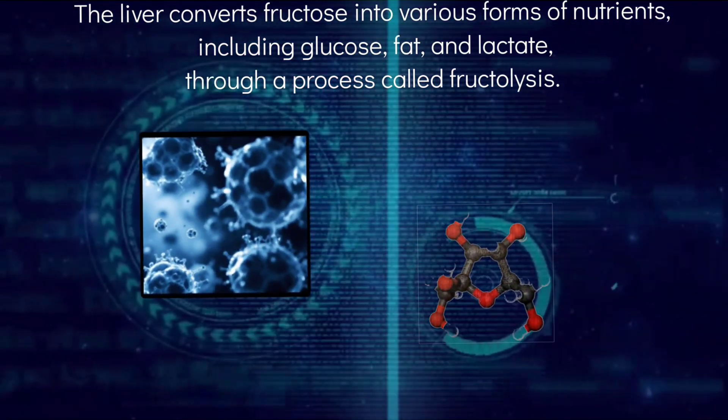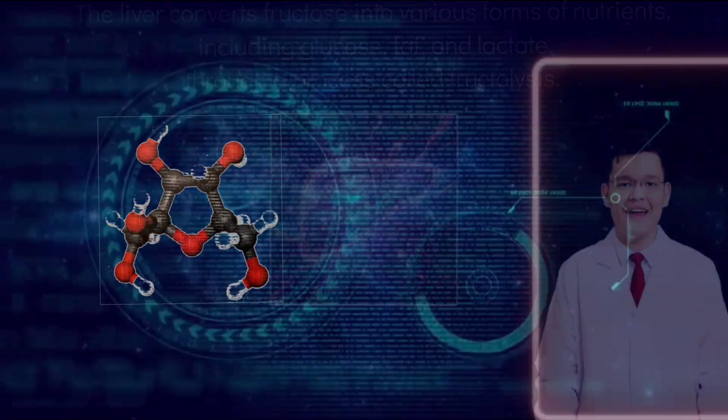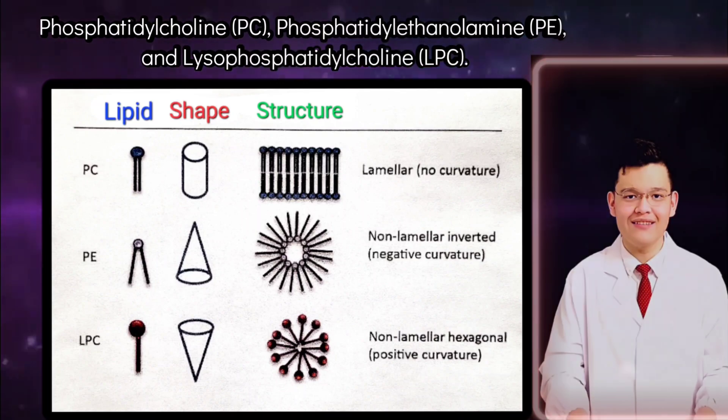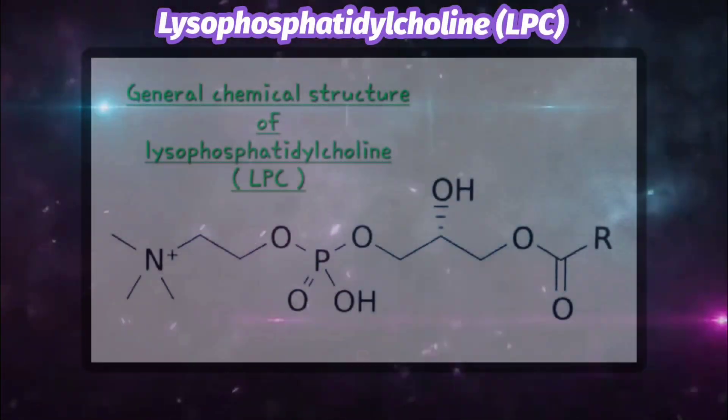In essence, fructose itself does not directly feed cancer cells. Rather, it is the liver's conversion of fructose into a lipid molecule called LPC that feeds the cancer cells. Cancer cells have a strong affinity for LPC, which they use to proliferate.